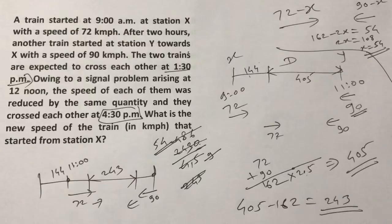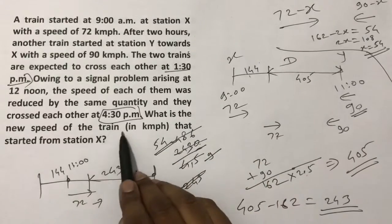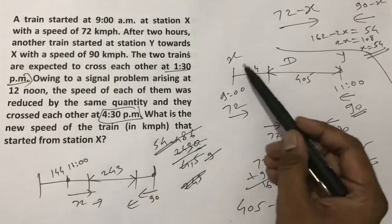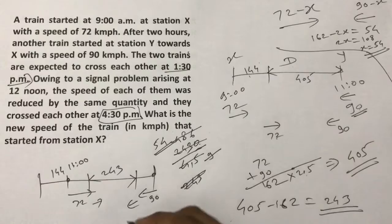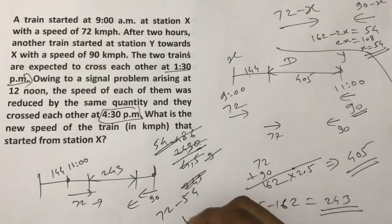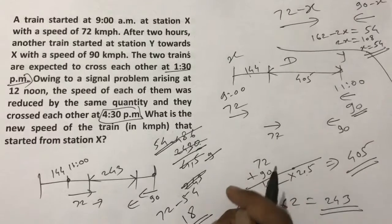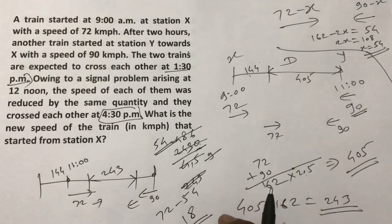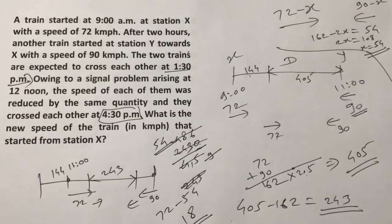So what we did is we reduced both trains' speed by x, meaning we reduced both trains' speed by 54 kmph. Now they are asking, what is the new speed of the train in kmph that started from station X? Station X - the train starting from here had original speed 72, which we reduced by 54. So now the new speed of that train is only 18 km per hour. Easy question, just the length of the question was long.